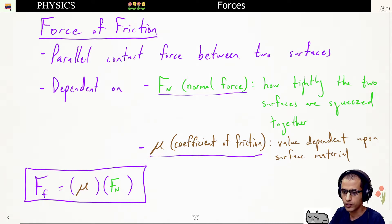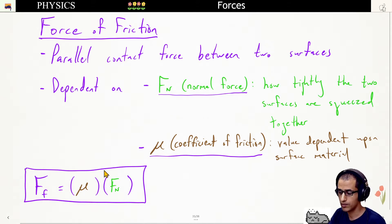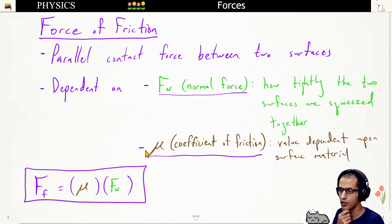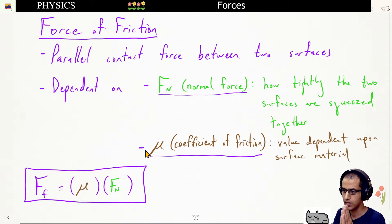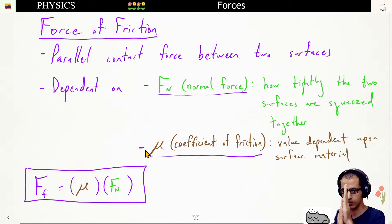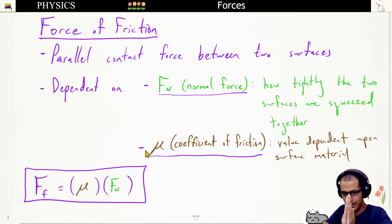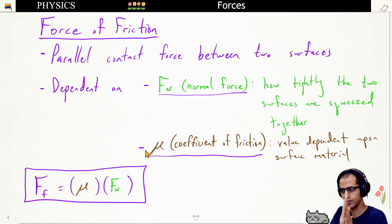We have an equation for the force of friction: force of friction equals mu times normal force. We can get a feel for friction ourselves by putting our hands together. We can feel the sliding resistance — that parallel force against our hands. I can increase the force of friction by squeezing my hands tighter together, making it much more difficult to slide them. Decreasing the normal force makes it very easy to slide.